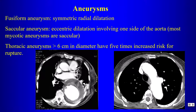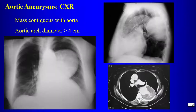Aneurysms may be fusiform, where we have symmetric radial dilatation, or saccular, where we have eccentric dilatation involving one side of the aorta. Most iconic aneurysms are saccular. Thoracic aneurysms greater than six centimeters in diameter have a five times increased risk for rupture. Once an aneurysm gets to five centimeters, we start to think about surgical therapy.